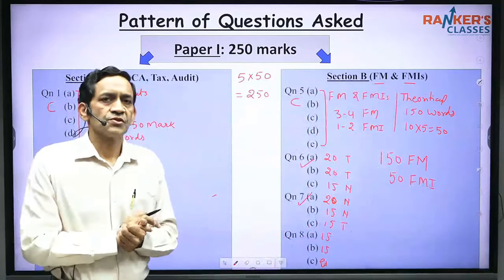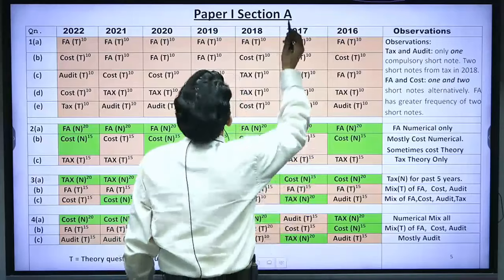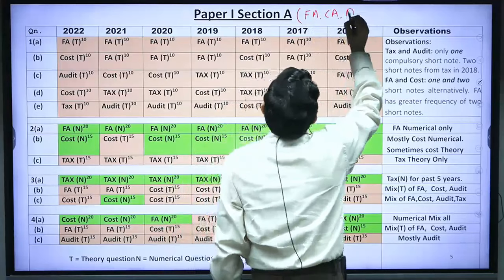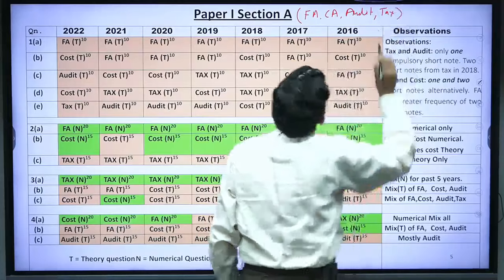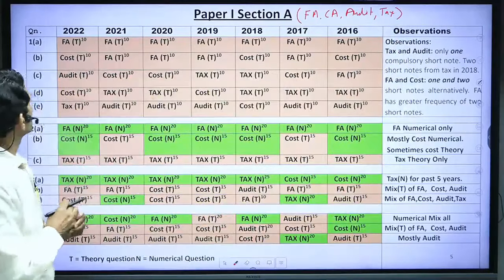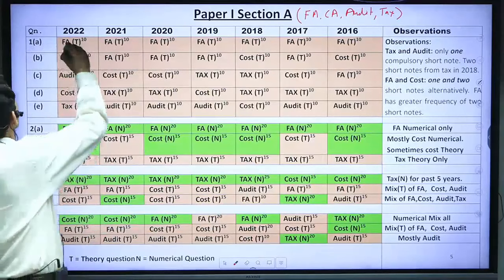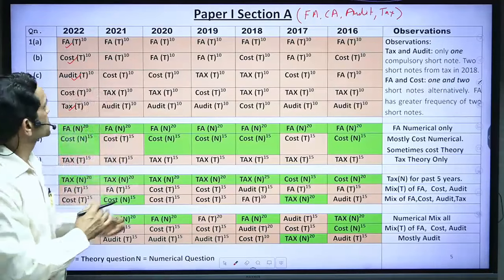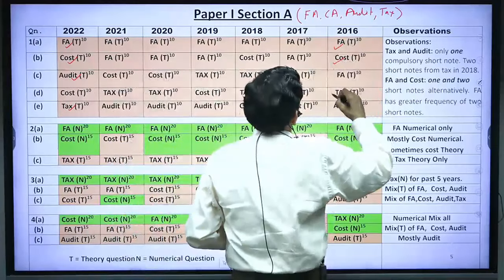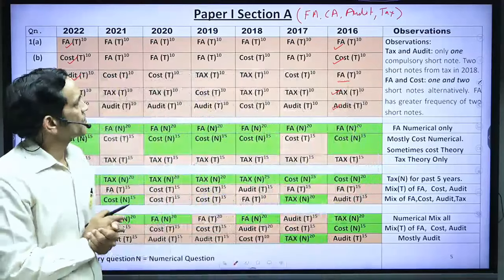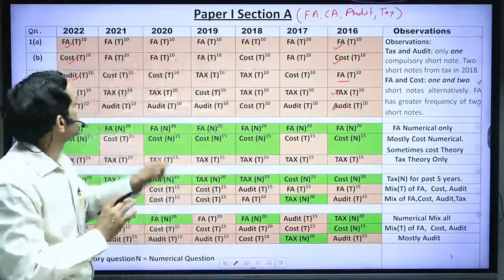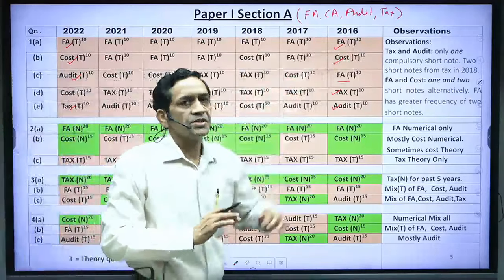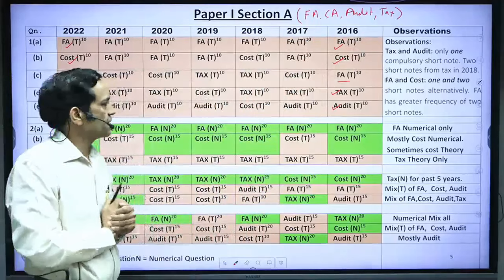Looking at Section A of Paper 1 in detail — it consists of Financial Accounting, Cost Accounting, Audit, and Tax. Question number 1 is a mix of short notes from all four areas, and one additional question may be asked from Financial Accounting or Cost Accounting. Similarly in other years, short notes cover all four subjects and a fifth short note may come from Financial Accounting. All these questions are theoretical, worth 10 marks each, and it is compulsory — so you must prepare all areas.